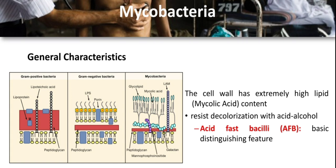Mycobacterium is the only genus in the Mycobacteriaceae family, Actinomycetales order, and Actinomycetes class. Closely related genera include Nocardia, Rhodococcus, Tsukamurella, and Gordonia. Mycobacterium species have an unusual cell wall structure containing N-glycolyl muramic acid instead of N-acetyl muramic acid, with a very high lipid content which creates a hydrophobic permeability barrier. Because of this, mycobacteria are difficult to stain with commonly used basic aniline dyes such as those used in Gram staining.